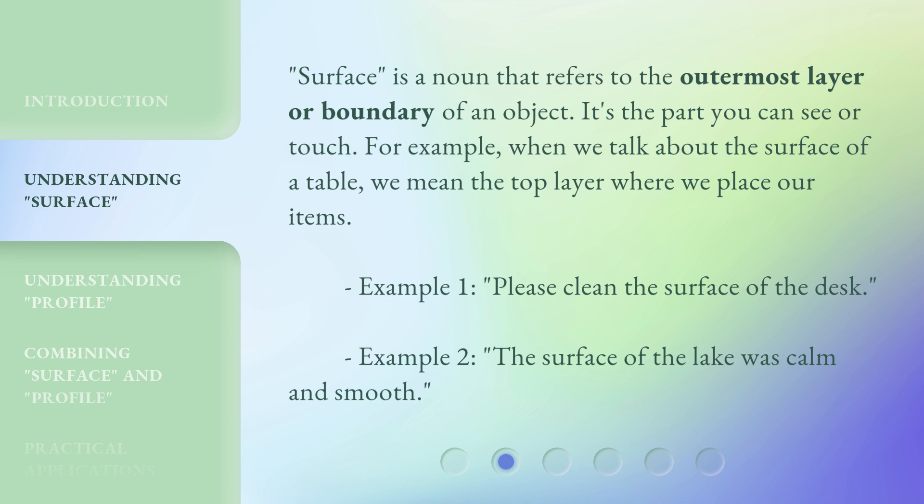Surface is a noun that refers to the outermost layer or boundary of an object. It's the part you can see or touch. For example, when we talk about the surface of a table, we mean the top layer where we place our items.